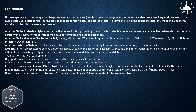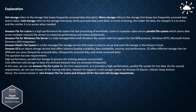The question has two requirements: high-performance parallel hot storage to process training datasets concurrently, and cost-effective cold storage for archived datasets. We can use Amazon FSx for Lustre for the first requirement, as it provides a high-performance parallel file system for hot data. For the second requirement, we can use Amazon S3 for cold data. Amazon S3 supports cold storage via Amazon S3 Glacier and Glacier Deep Archive. Hence, the correct answer is: use Amazon FSx for Lustre and Amazon S3 for hot and cold storage respectively.